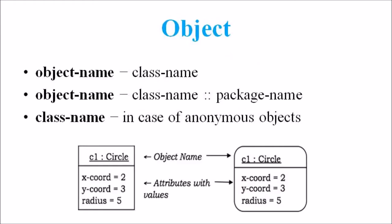Next, we are discussing the term object. An object is a real world entity and in the UML representation, an object is represented by a rectangle with two sections. The top section contains the name of the object with the name of the class or package of which it is an instance of. The name may take the form: object name hyphen class name, or object name hyphen class name extending the package name, or class name itself in the case of an anonymous object. The bottom section represents the value of the attribute, taking the form attribute name equals some value. Sometimes objects are represented using rounded rectangles also.